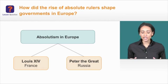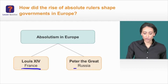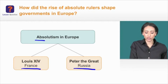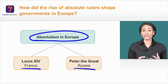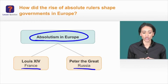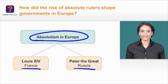By understanding the rule of Louis XIV and Peter the Great, we'll have a better idea of how absolutism in Europe unfolded during the 15 and 1600s. And by the end of today's lesson, we'll be able to answer this question: how did the rise of absolute rulers shape governments in Europe?